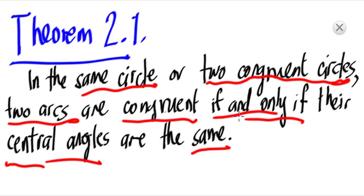In the same circle or two congruent circles, two arcs are congruent if and only if their central angles are the same. Since the measure of the central angle equals the measure of the arc, and the arcs are in congruent circles, the two arcs are congruent. That's it for this video — thank you for watching, and please like and subscribe to my channel.